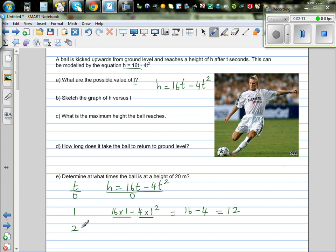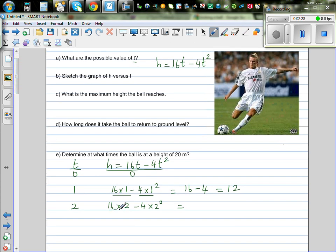So when t is 2, that is after 2 seconds, it will be 16 times 2, minus 4 times 2 squared. So if you make the table, it does make you understand what is happening. So 16 times 2 is 32, minus, first I have to simplify the power first. So this is 4 times 4 is 16. So after 2 seconds, it was 16 meters high.